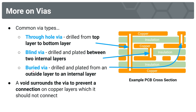Lastly, of the three common via types, we have the buried via. This is drilled and plated from the outside copper layer — either top or bottom — to an internal layer. If a via travels through multiple copper layers, how does it prevent itself from connecting to layers it passes through but doesn't connect to? We simply leave a void around the via where there is no conductive material. That prevents the via from connecting to nearby traces. As you can see, a white gap has been left between the via and the copper traces.